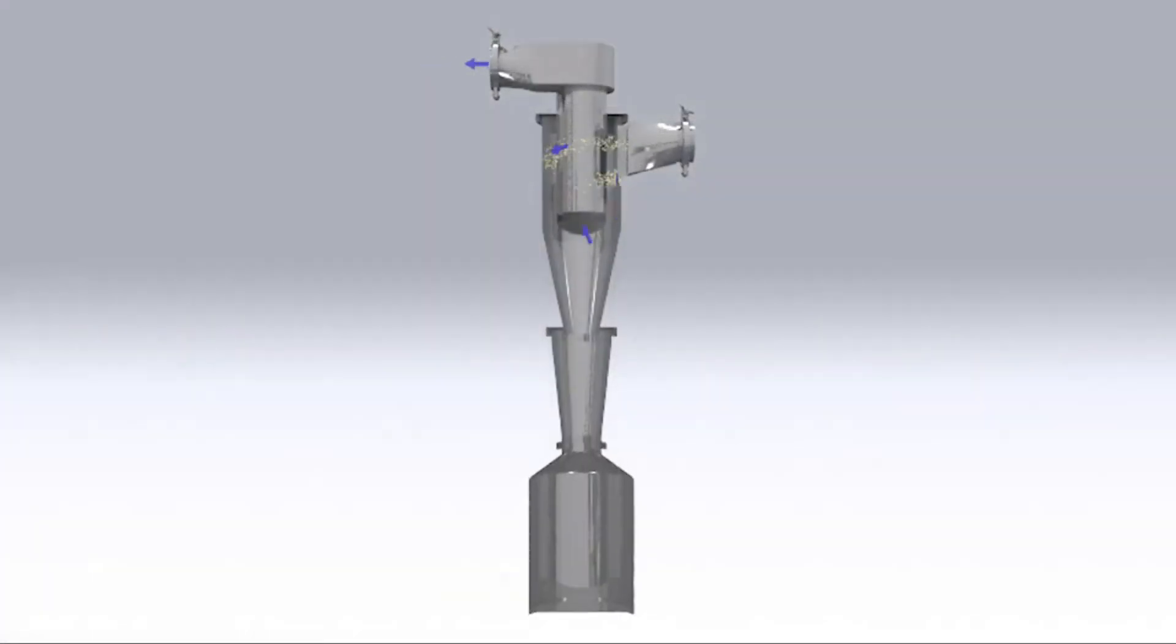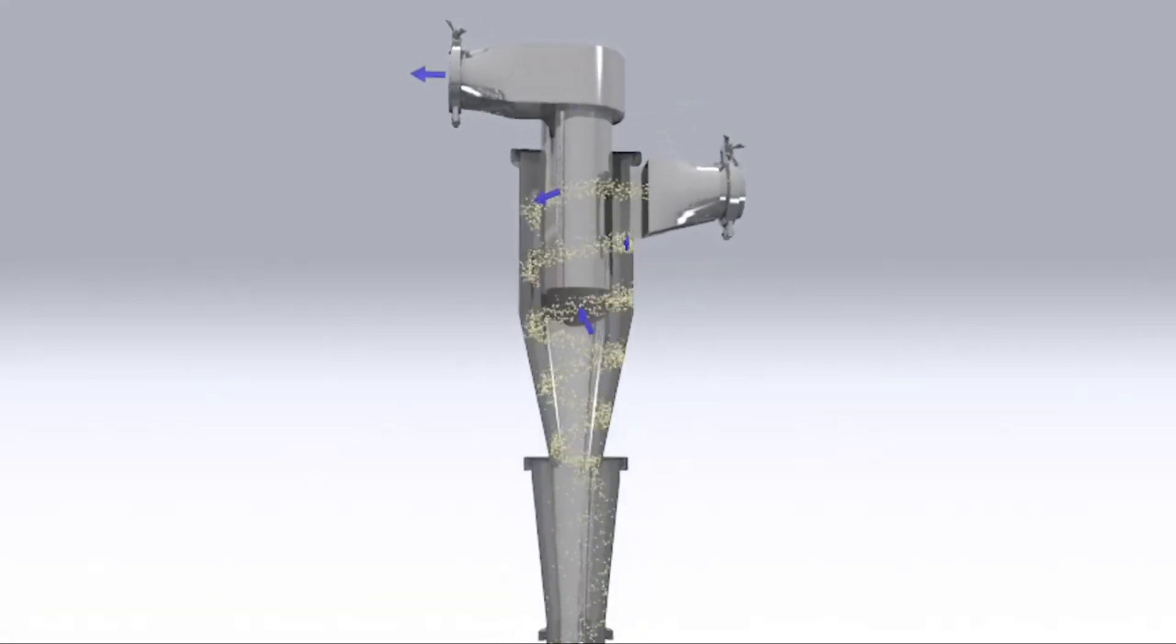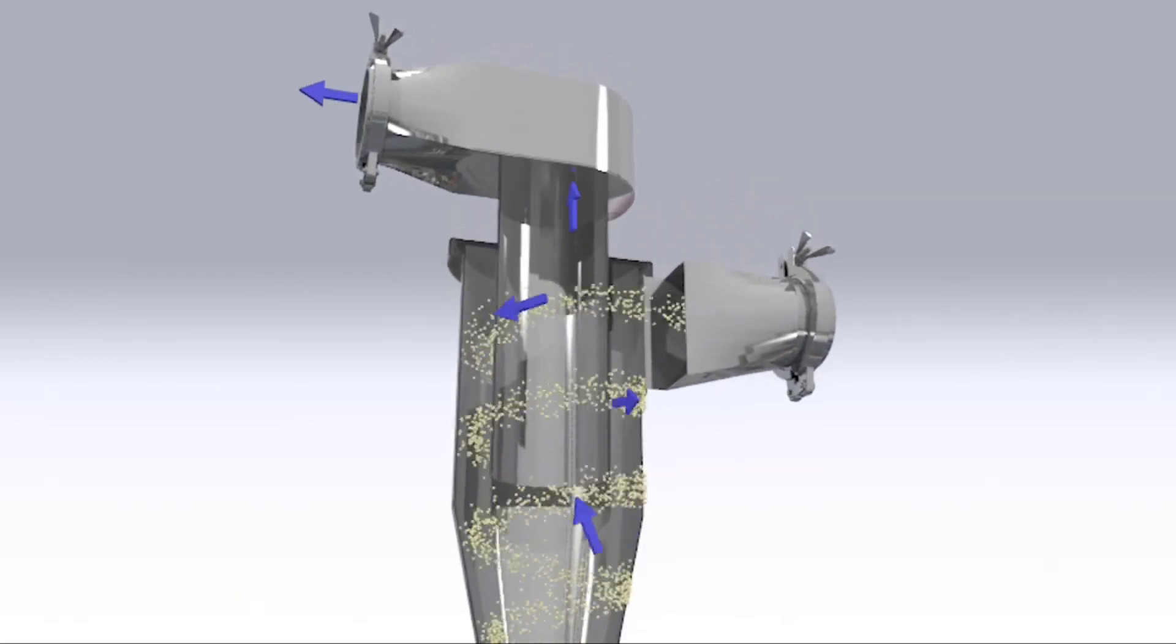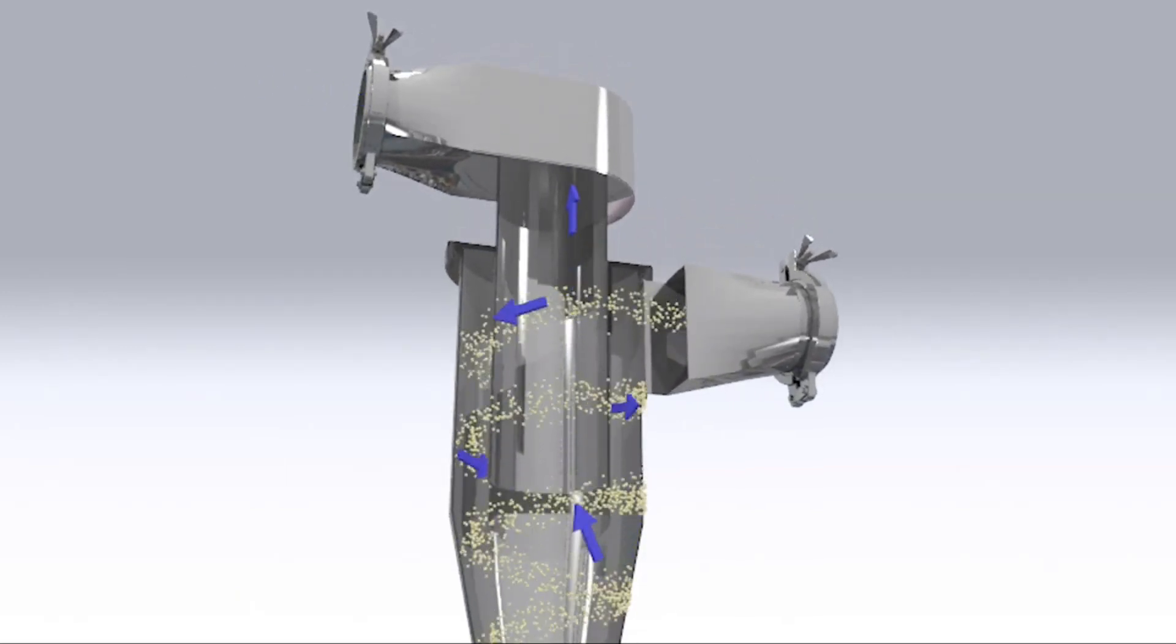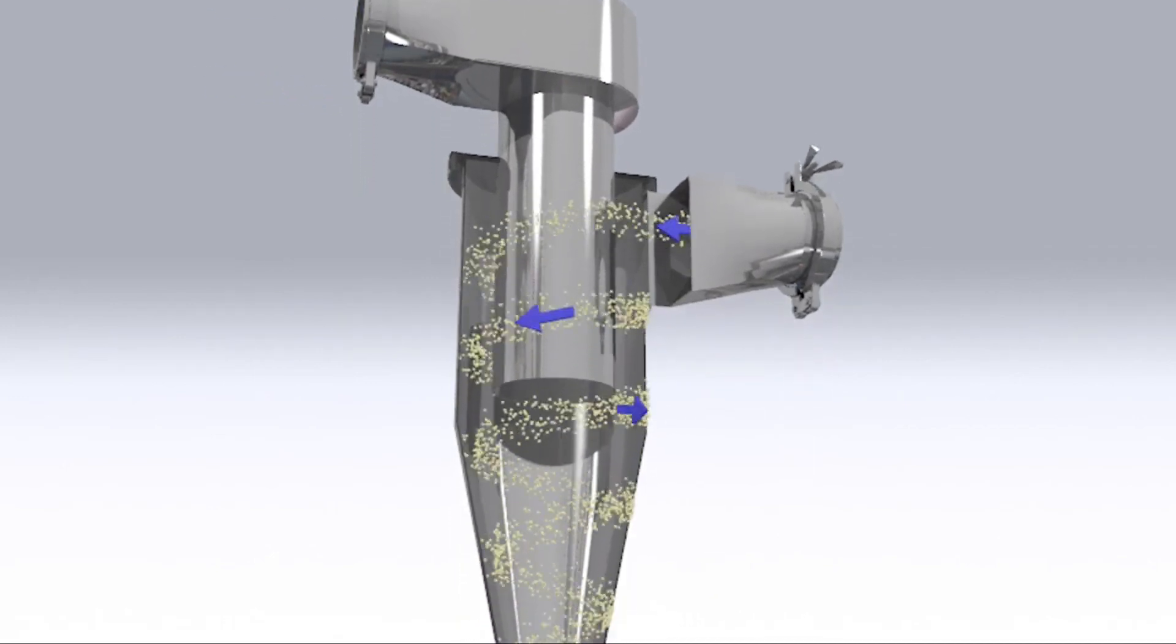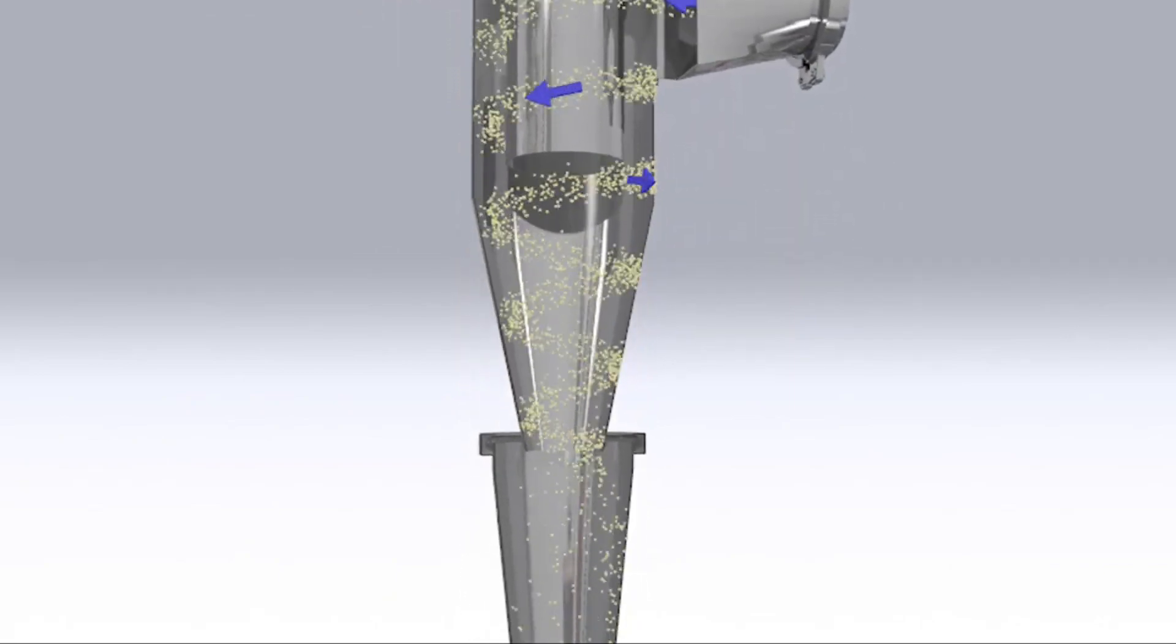Inside the cyclone, vortex separation causes the solid particles to hit the outside wall of the cyclone and fall to the catch pot, allowing clean air to pass downstream to the dust extraction source. The captured waste material can be used for batch loss reconciliation or even reintroduced to the process where protocol permits.